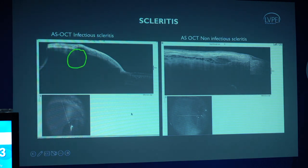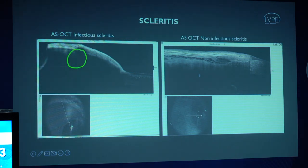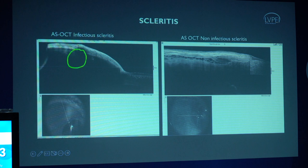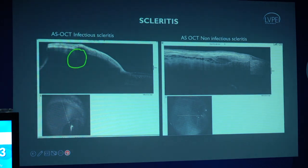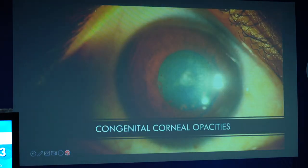Moving on to scleritis — although traditionally it was a clinical diagnosis, OCT can be useful in differentiating it from episcleritis. Looking at infectious versus non-infectious scleritis: in infectious scleritis there is significant back-shadowing due to the presence of a nodule, whereas in non-infectious scleritis you see significant engorgement of the vessels, thickening of the sclera, and inability to localize the posterior margin of the sclera.